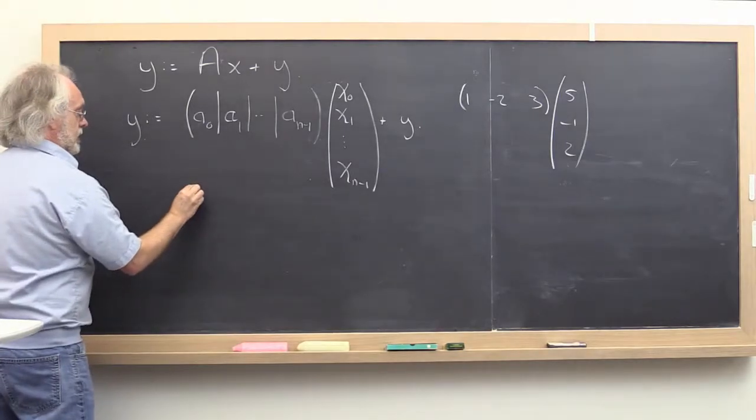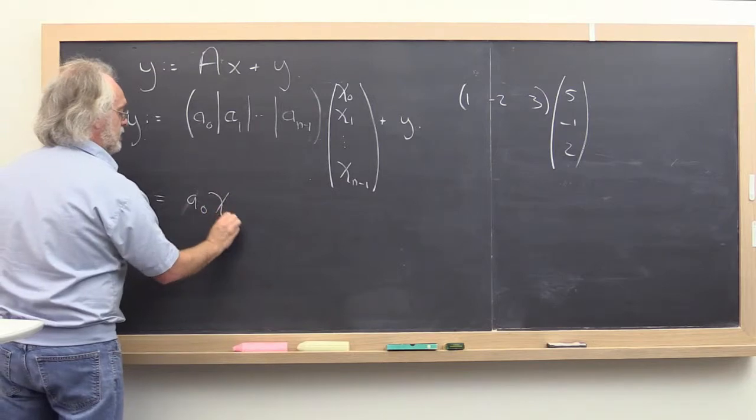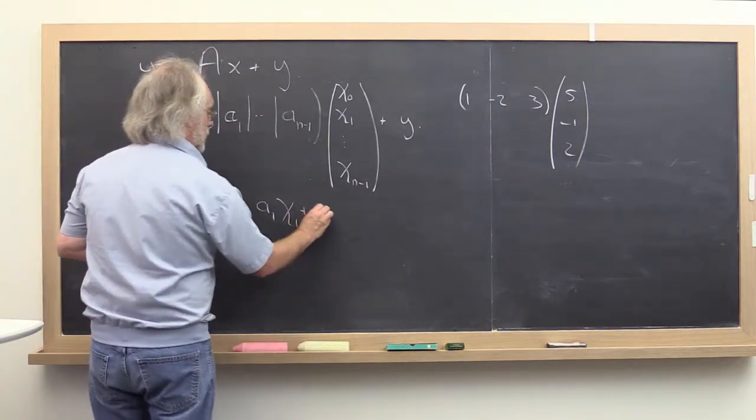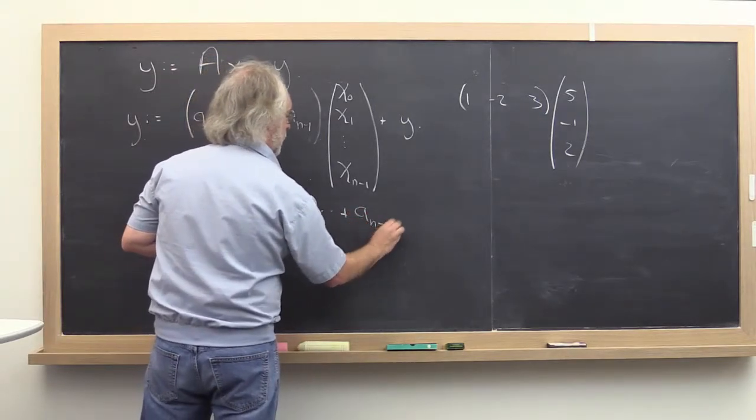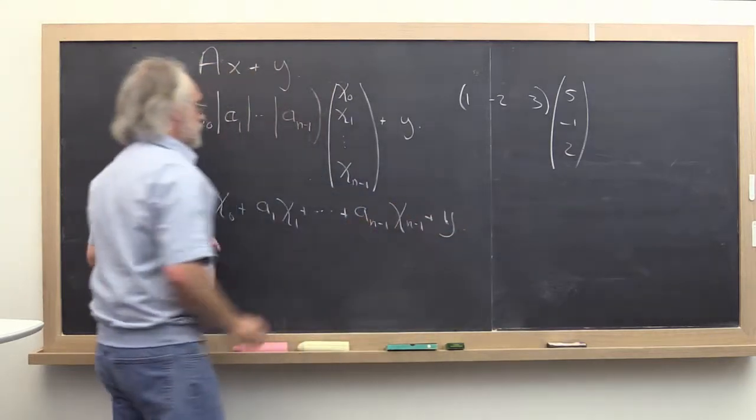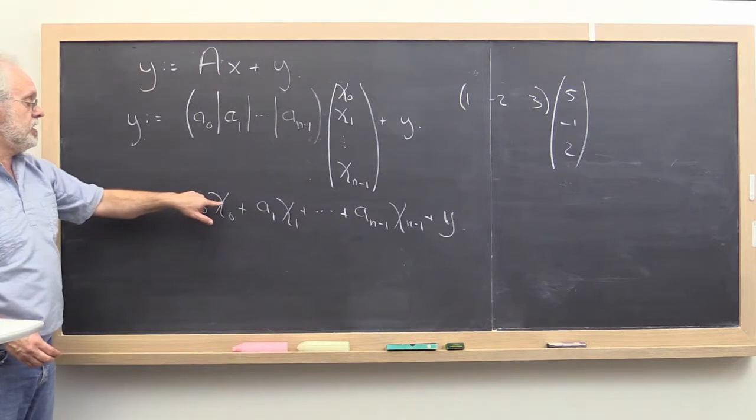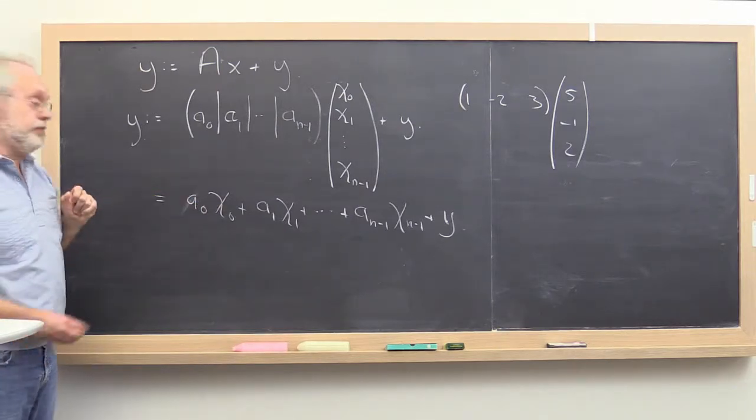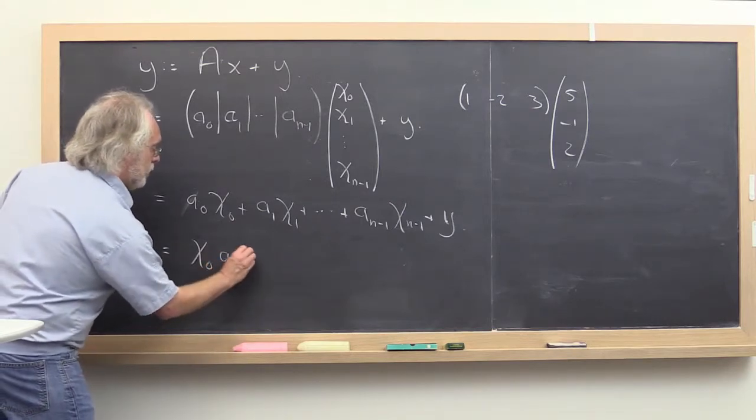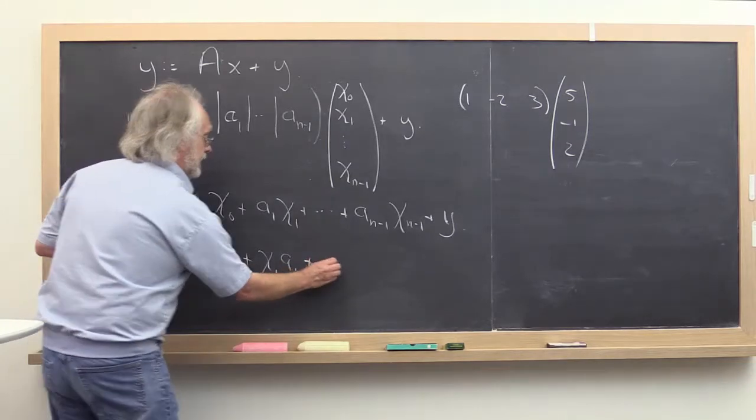So we get this is the same as A0 times chi zero plus A1 times chi 1, etc. But then it turns out that if you do a column vector times a scalar, that's the same as doing the scalar times the column vector. So this is actually the same as chi zero times A0 plus chi 1 times A1 and so forth.